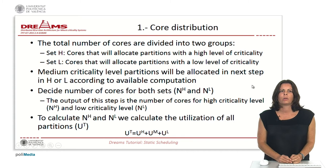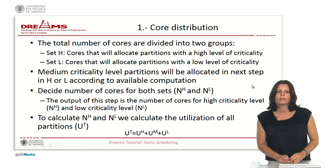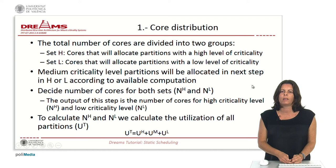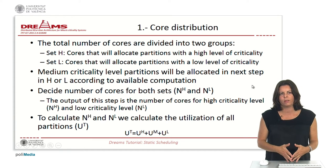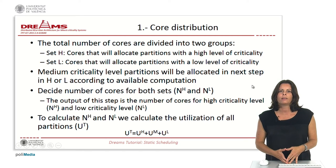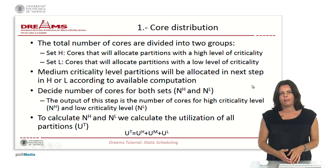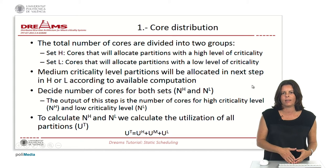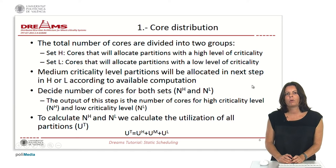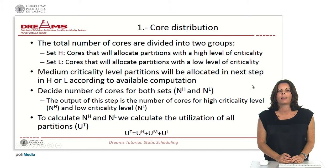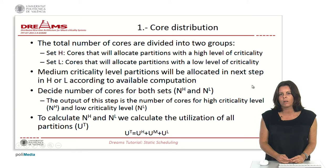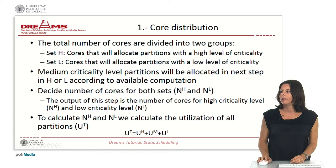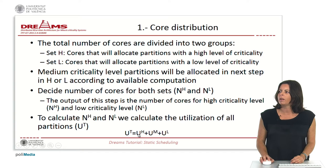The set H will be the set of cores that will allocate partitions with the higher level of criticality. Meanwhile, the set L will be the cores that will allocate the low level criticality partitions. We will also have partitions with a medium criticality level that will be allocated in the next step to either set H or set L, with a preference for set H. To decide the number of cores for both sets — parameters NH and NL — we first have to calculate the total utilization of the system: the utilization of partitions belonging to the high, medium, and low criticality levels.